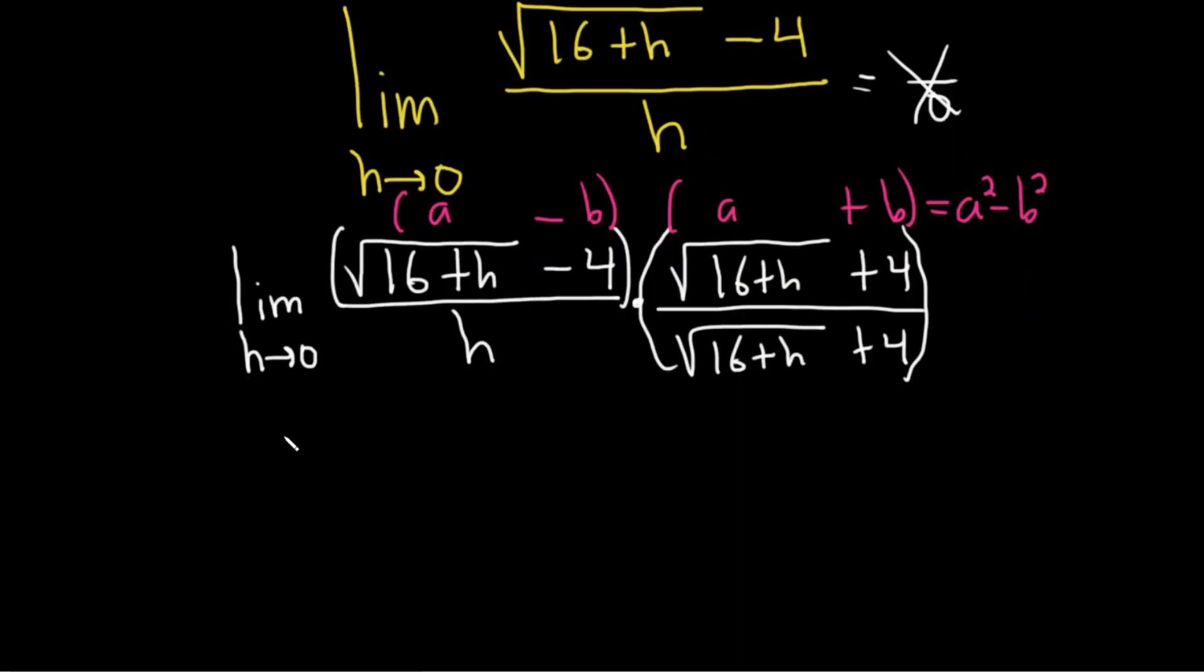So let's apply this formula to this problem. So this is the limit as h approaches 0. So a is the square root of 16 plus h. So when you square that, you're just going to get 16 plus h. Right? That's a squared. Right? Because you square the a, you subtract, and then you square the 4. So that's 16. Right? 4 squared is 16.